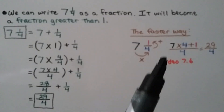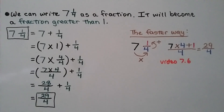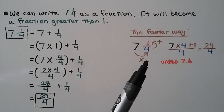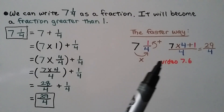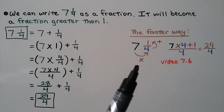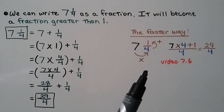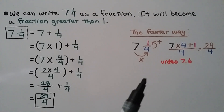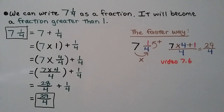We're going counter-clockwise. We first multiply to the denominator, then add the numerator. So we have two different operations — don't get confused. Multiplication, then addition. If this really confuses you, we're going to go over this again in a couple minutes, and you can also watch video 7.6 when we first learned about it.